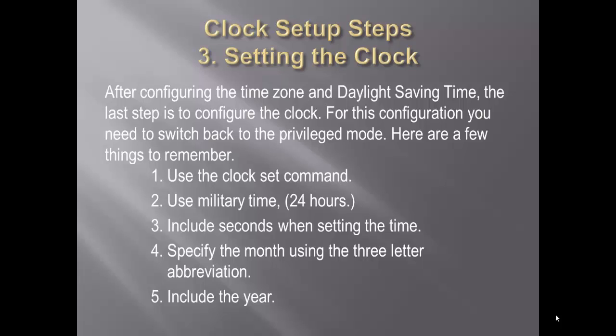After configuring the time zone and daylight savings time, the last step is to configure the clock. For this configuration, you need to switch back to the privilege mode. Here are a few things to remember while setting the clock: use the clock set command, use 24-hour military time, include the seconds when you are setting your time, specify the month with a three-letter abbreviation, and include the year.